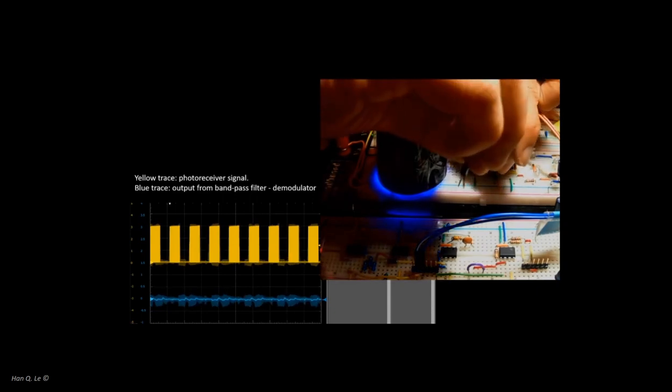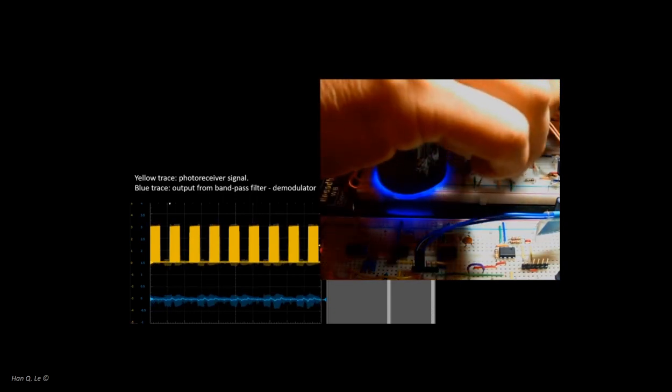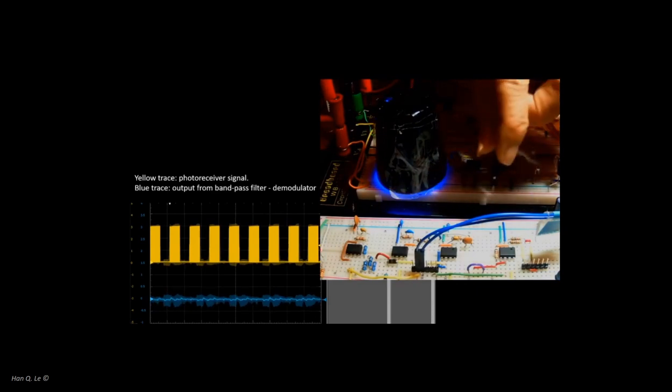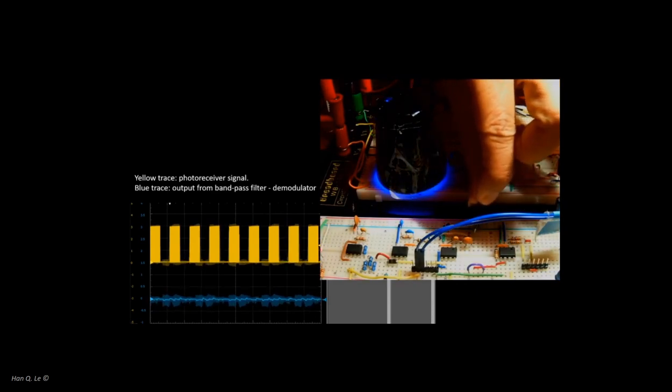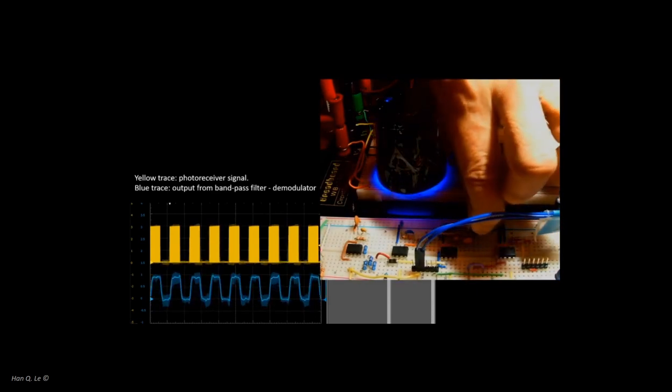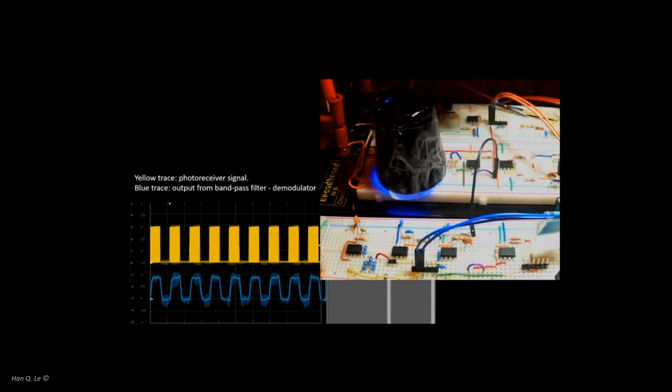The photoreceiver signal is input into the bandpass demodulator circuit. The bottom line is, in this lab assignment, we will learn that the response behavior of an amplifier is the essence of its performance. The concept applies not only for amplification, but virtually all types of signal processing. That's the take away of all this work.